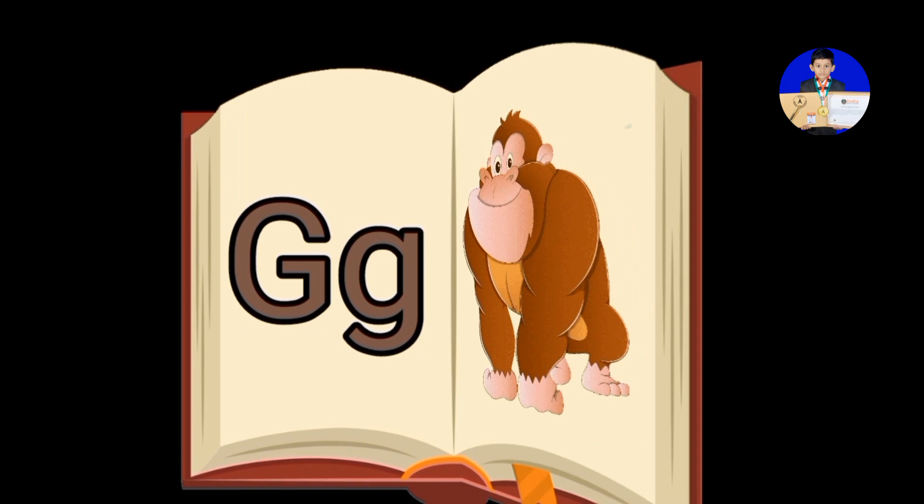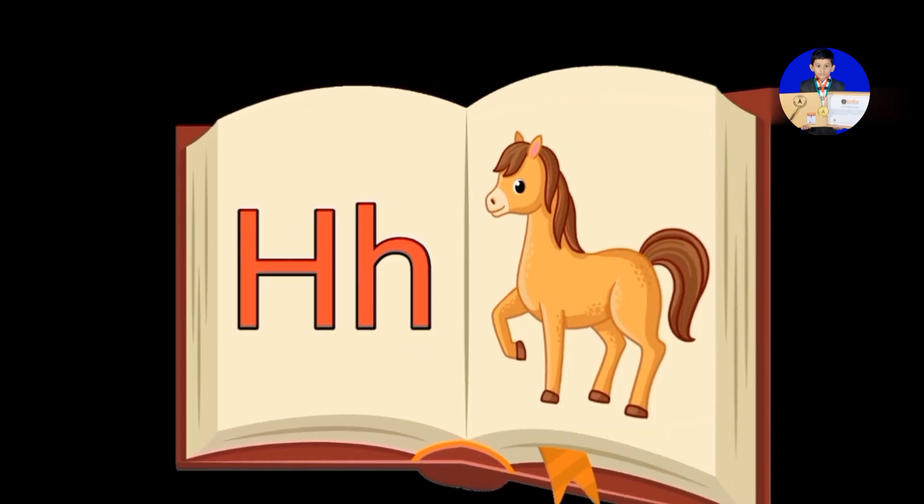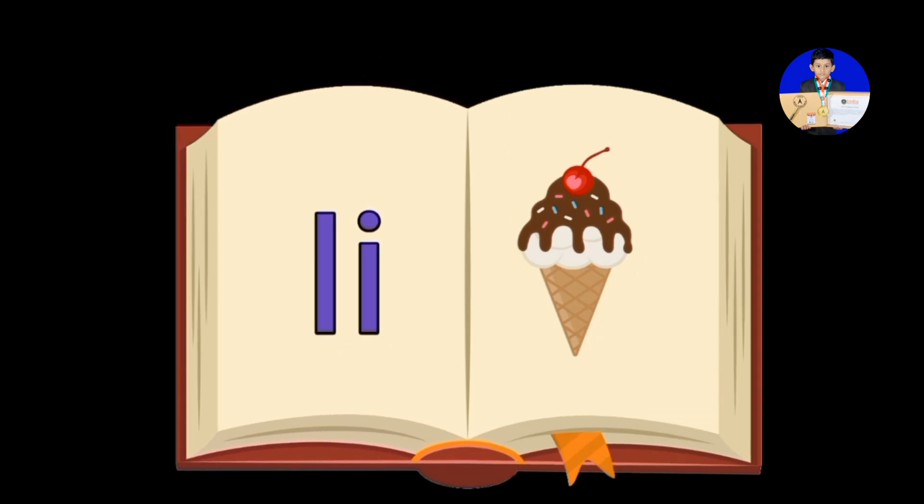H is for Horse. I is for Ice Cream. J is for Joker.